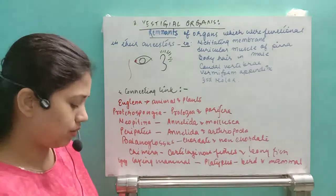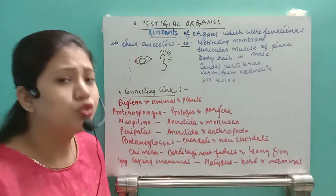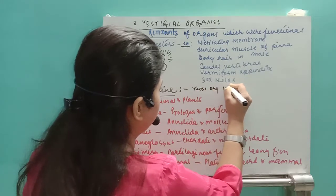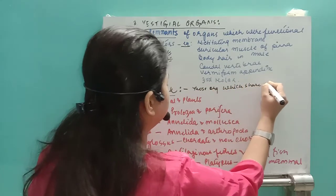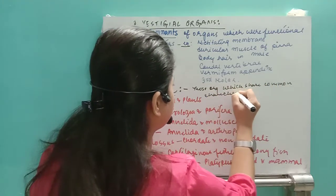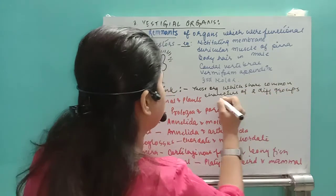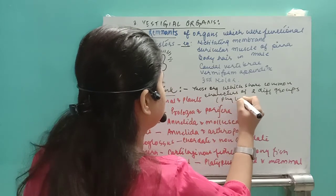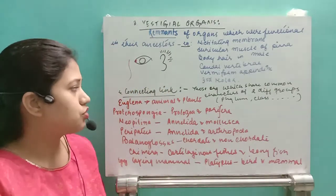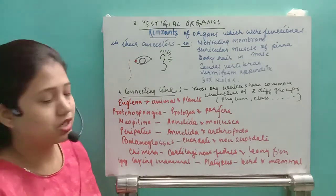Now let us move to connecting links. Connecting links are those organisms which share common characters of two different groups — whether it is a phylum, class, family, or order. These examples often appear in examinations.